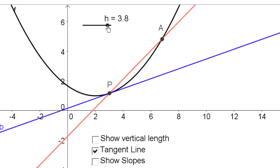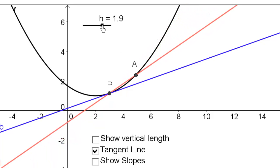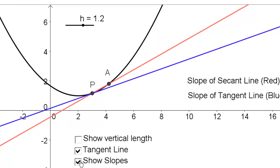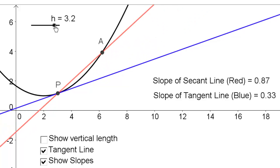Now notice what happens as A gets closer and closer. The red line, let me actually show you the slopes here. Here's the slope again, don't worry about tangent line. This means the slope at P is 0.33. Now the slope of the secant line is 1.02.